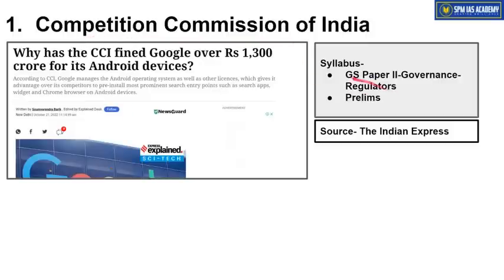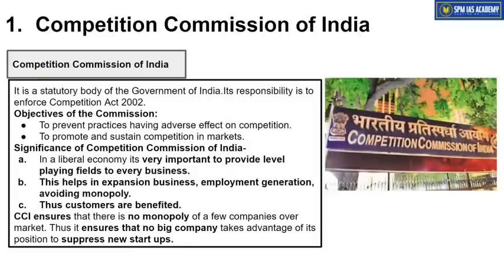The first article is about the Competition Commission of India. This topic is important from GS Paper 2 Governance point of view, especially from the regulators segment, because Competition Commission of India is a regulator of the market segment of the Indian economy. Its main purpose is to promote market competition and prevent monopoly or duopoly, so that entities with monopolistic control cannot exploit customers.